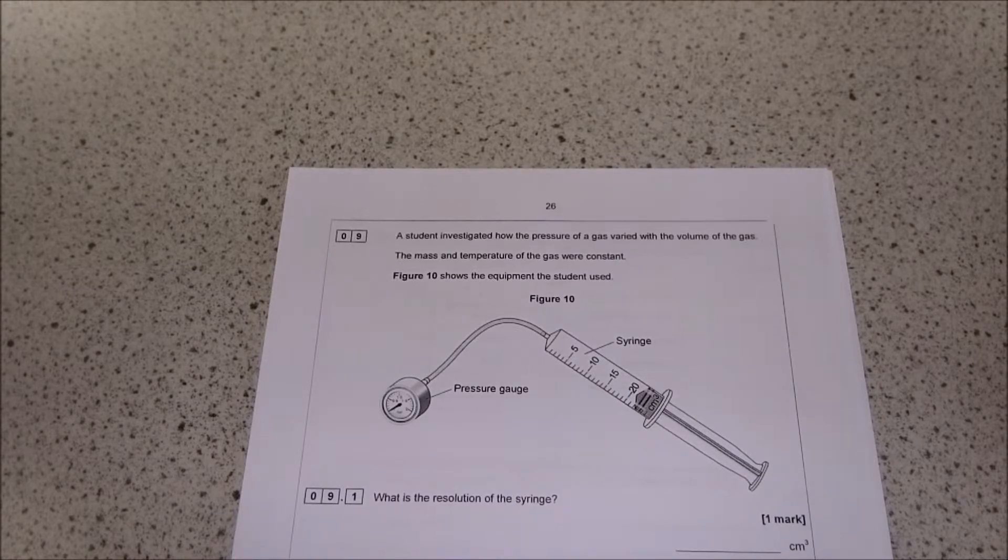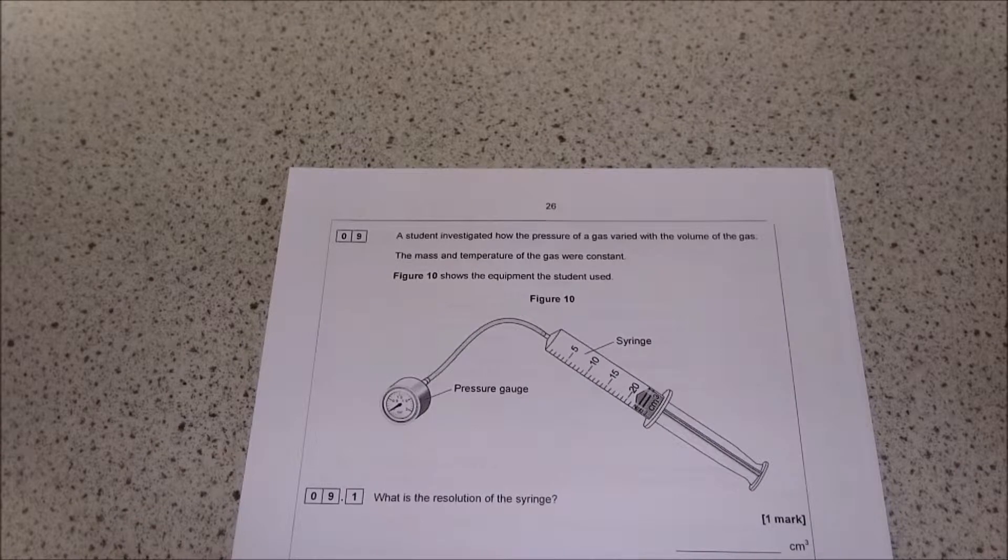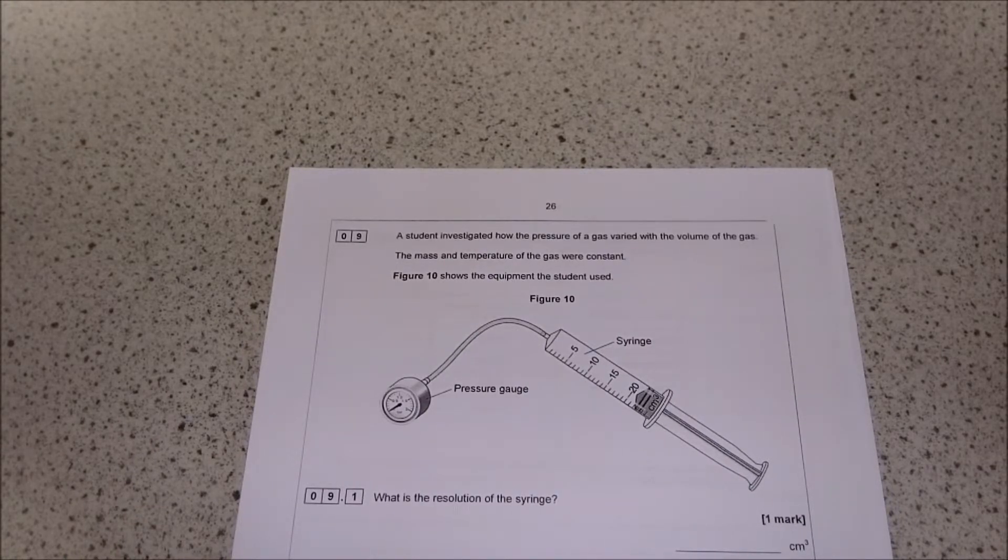If in a question they're talking about something being kept constant, you've always got to bear in mind that that must mean they are some sort of control variables. Figure 10 shows the equipment that the student has used.